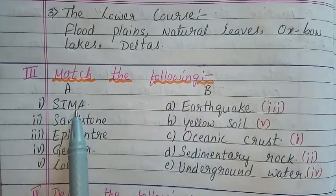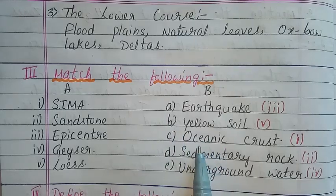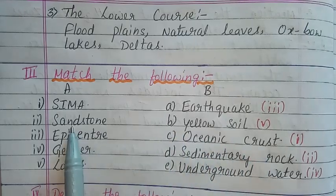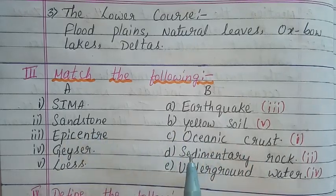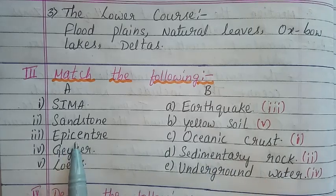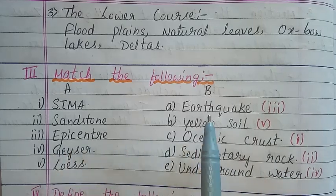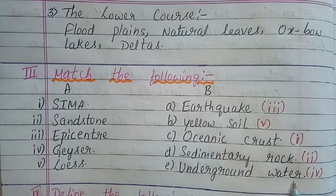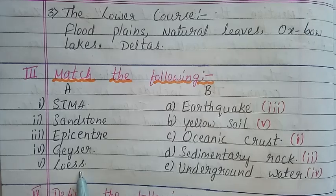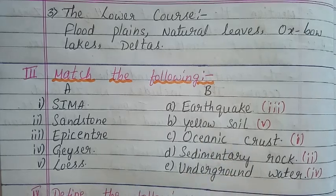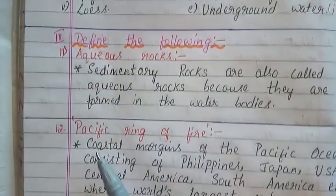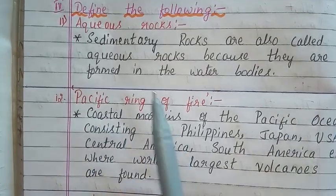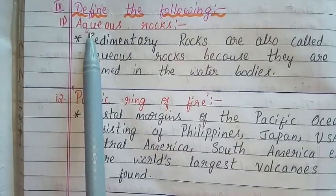Next section: Match the Following. SIMA — Answer: Oceanic crust. Sandstone — Answer: Sedimentary rock. Epicenter — Answer: Earthquake. Geyser — Answer: Underground water. Loess — Answer: Yellow soil.